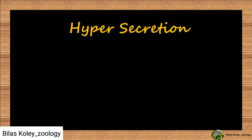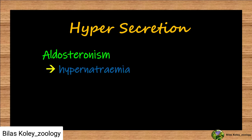Hypersecretion of mineralocorticoids leads to aldosteronism, characterized by hypernatremia, hypokalemia, increased blood volume and blood pressure, and this can cause irritation in tissues.